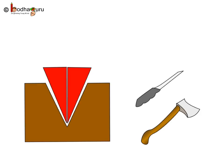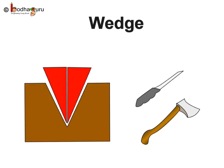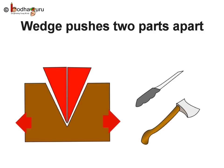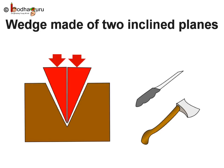Our kitchen knife or a woodcutter's axe is also a machine — they are called a wedge. A wedge is a simple machine used to push two objects apart, and it is one of the oldest mechanisms. A wedge is made of two inclined planes that meet and form a sharp edge.